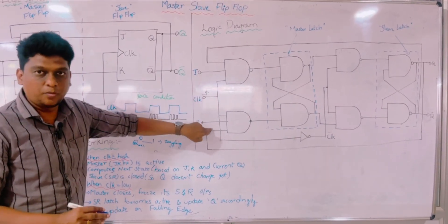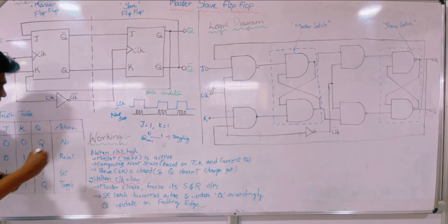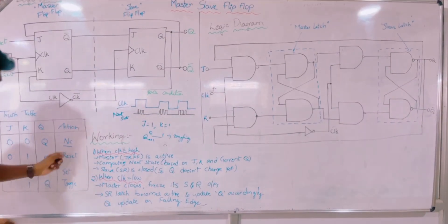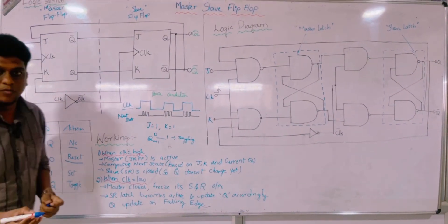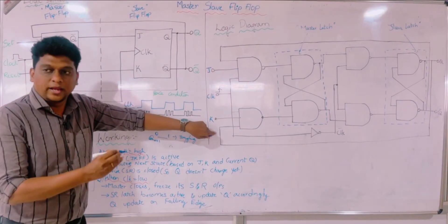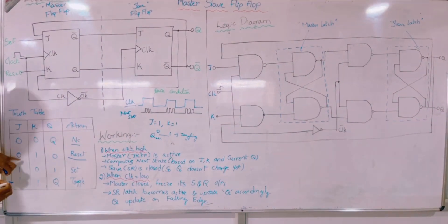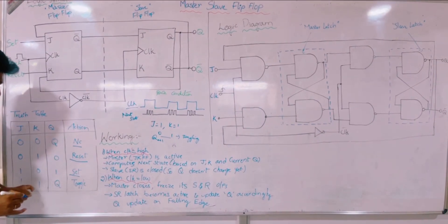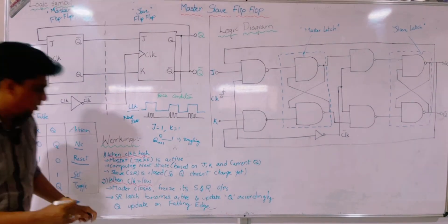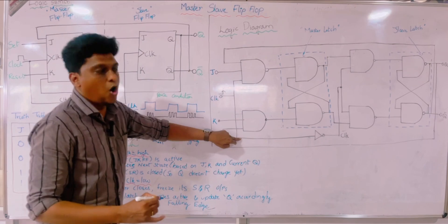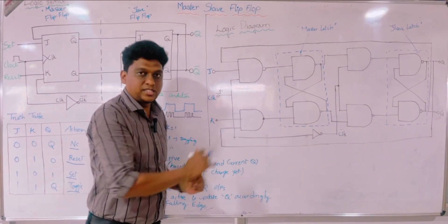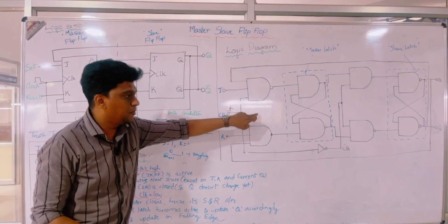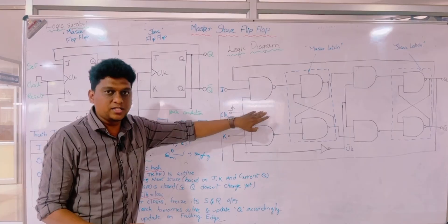The basic operation follows the truth table of the JK flip-flop. Whenever the condition is J=0, K=0, there will be no change. Whenever J=0 and K=1, it returns to the reset condition. When J=1 and K=0, it is the set condition. Finally, when both inputs are 1, the present state will toggle and we get the complemented output. This is similar to the working of the JK flip-flop.